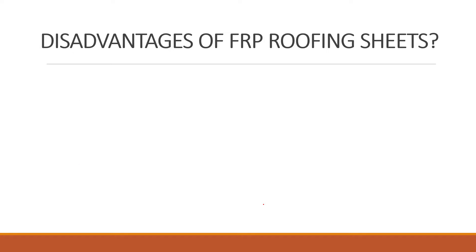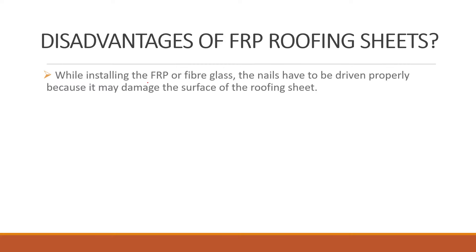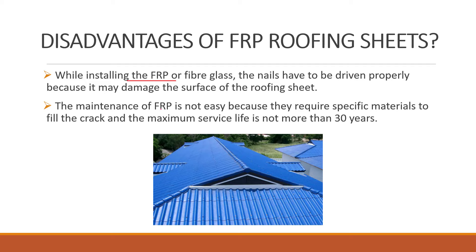Disadvantages of FRP roofing sheets: while installing FRP or fiberglass, nails have to be driven properly because there is a chance of damage on the surface of the roofing sheet, which can cost a lot of money. Maintenance of FRP is not easy because it requires specific material to fill cracks. The maximum service life is not more than 30 years. However, the advantages outweigh the disadvantages, so many homeowners prefer FRP roofing sheets.